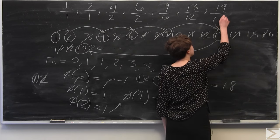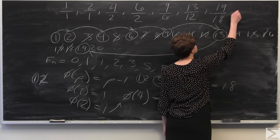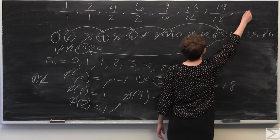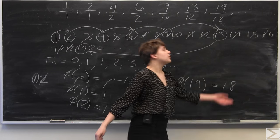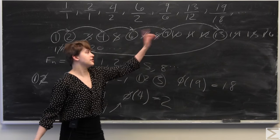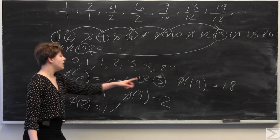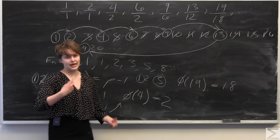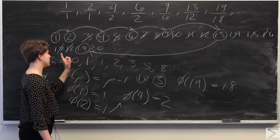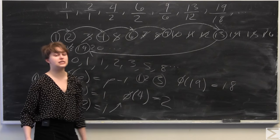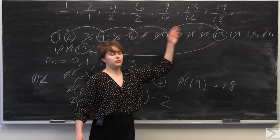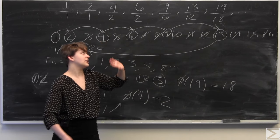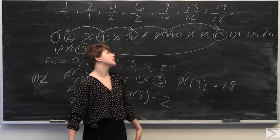So the next number in the sequence is 19/18. If you wanted to find the number after that, you would skip 8 integers from 19, then take phi of that resulting numerator to get the new denominator, and so on and so forth.